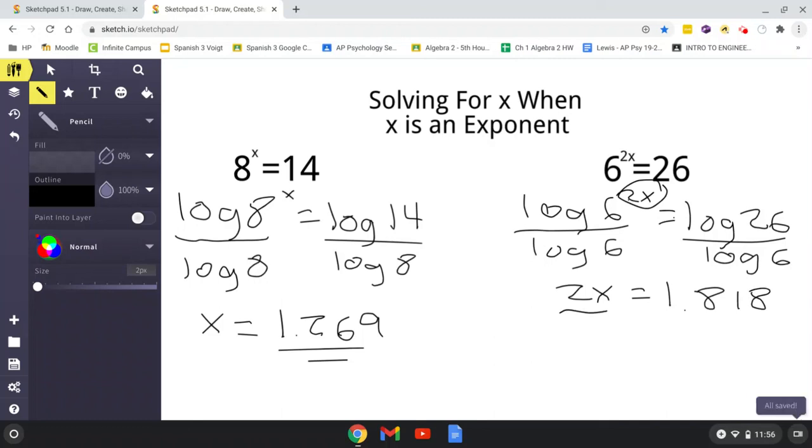And from here, all you do is divide by 2, divide by 2, x equals 0.909.